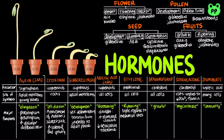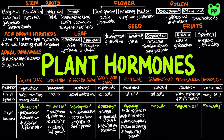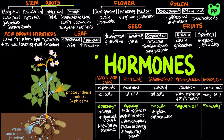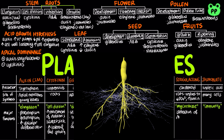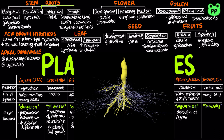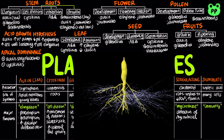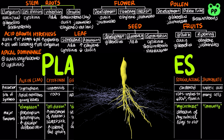The triple response consists of a slowing of stem elongation, a thickening of the stem, and horizontal growth. Brassinosteroids can promote xylem differentiation and inhibit phloem differentiation. As mentioned earlier, strigolactones are mainly responsible for attraction of mycorrhizal fungi to roots, enhancing plant roots' absorption of water and minerals.